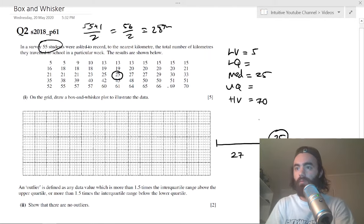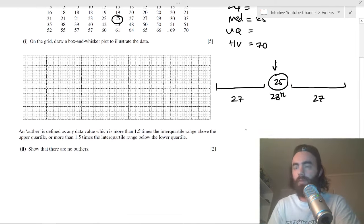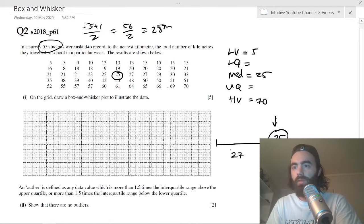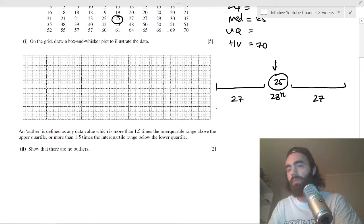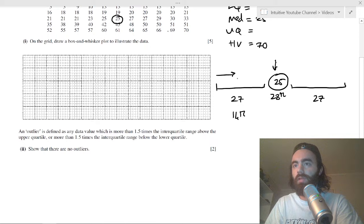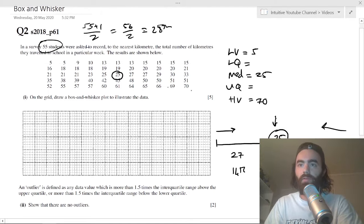With 27 data points, the middle will be (27 + 1)/2, which is 28/2, which is 14. So count 14 in to get the lower quartile and also count 14 in to get the upper quartile. 14 in here is 50, so that's your upper quartile. And 14 in on the lower side is 18.